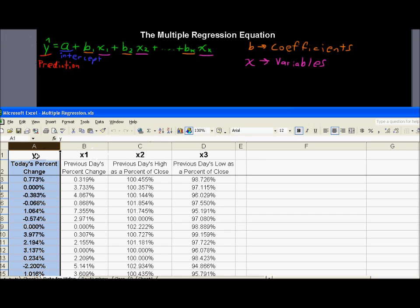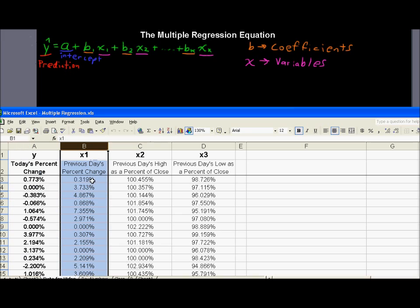And then, that's our dependent variable. Our independent variables, the first one is previous day's percent change. So you know, you don't know what it's going to do today. I do at the end of the day, but at the beginning of the day, you don't know. But you do know yesterday, previous day's percent change, and what happened.